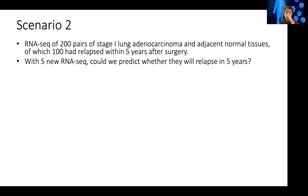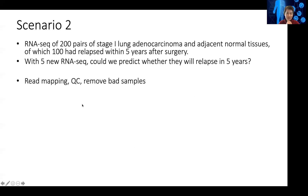So this is 400 FASTQ files — a lot of data to deal with. What do we do first? We will do read mapping. When you have a lot of samples, sometimes you might want to just run Salmon and then do a clustering.